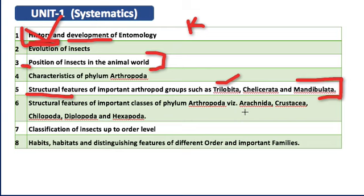For the classes of Phylum Arthropoda — first, Arachnida: examples are mites and scorpions. Scorpion body is divided into two segments — prosoma and opisthosoma. Mites body is divided into three segments — prosoma, metasoma, and opisthosoma. They have four pairs of legs. For respiration, scorpions have book lungs and mites have tracheae. They are predatory in nature and also pests of crops. They do not have antennae.